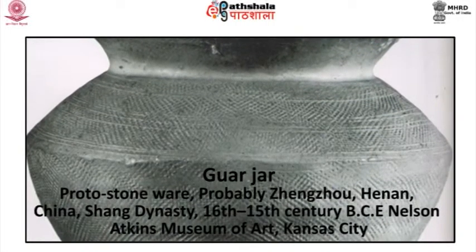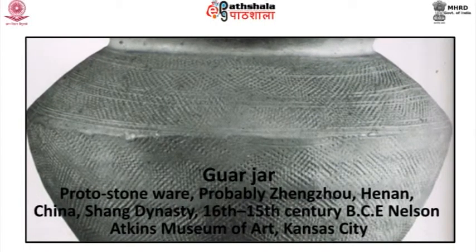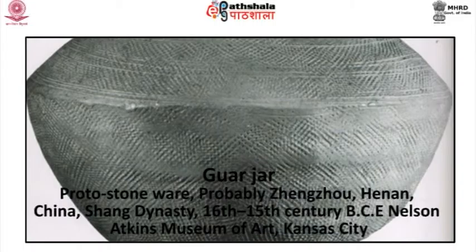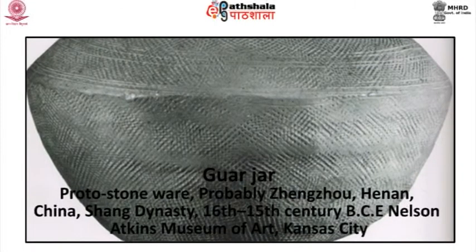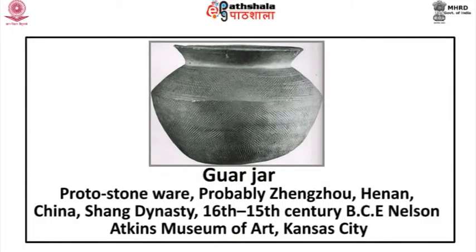Coarse gray pottery for everyday use was found in the more ordinary living areas. The extraordinary discovery of high-fired and glazed stoneware at Zhengzhou is represented by a guan jar — a proto-stoneware, probably from Zhengzhou, Henan, China, belonging to the Shang dynasty, dated to the 16th–15th century BCE, now in the collection of the Nelson-Atkins Museum, Kansas City.